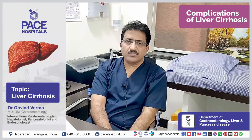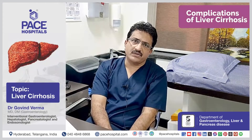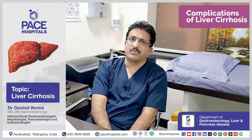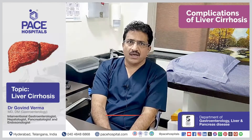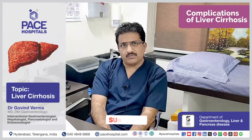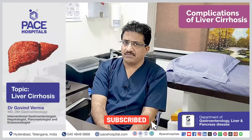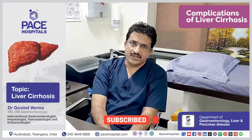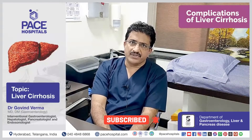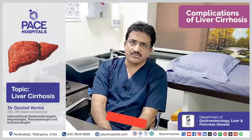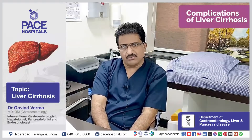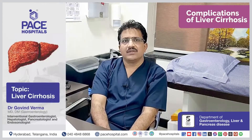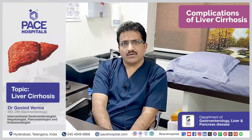The first and foremost complication of liver disease or cirrhosis of the liver is portal hypertension. Complications of portal hypertension include GI bleeding — gastrointestinal bleeding — which can present as blood vomiting, black motion, or red color motion.